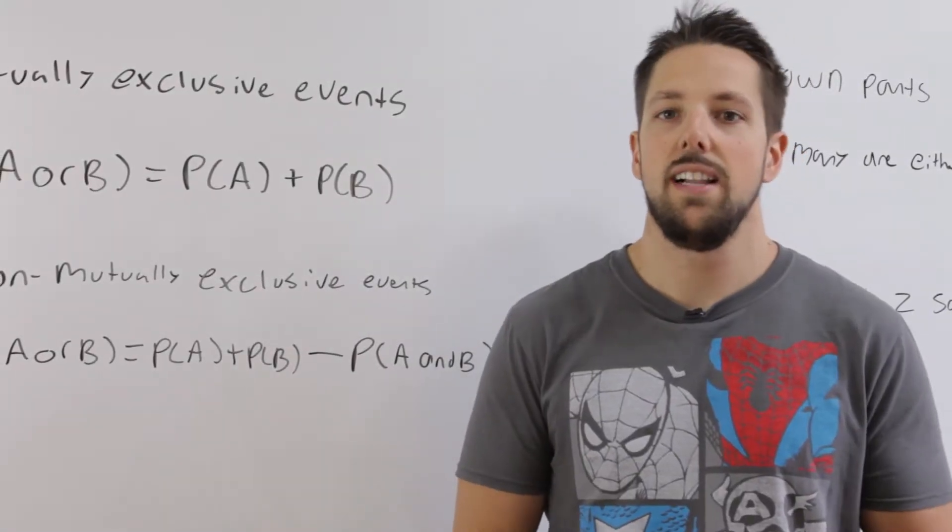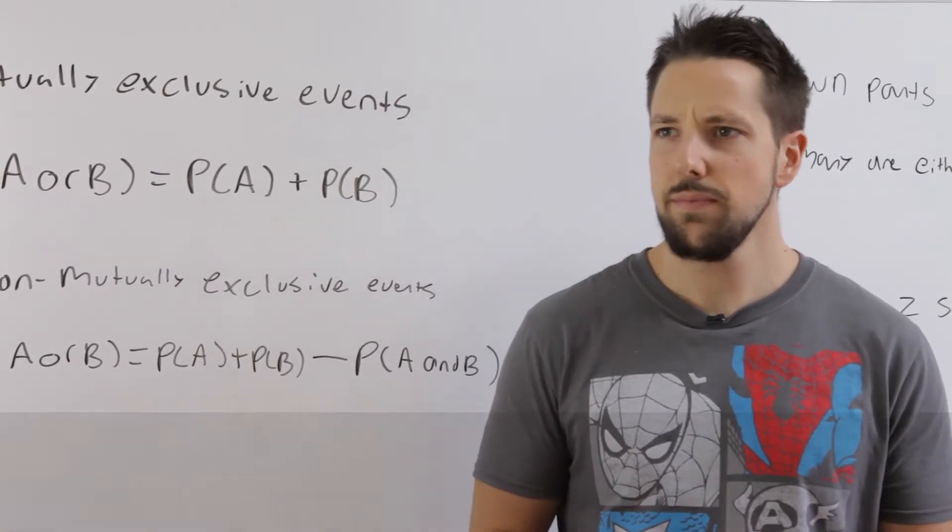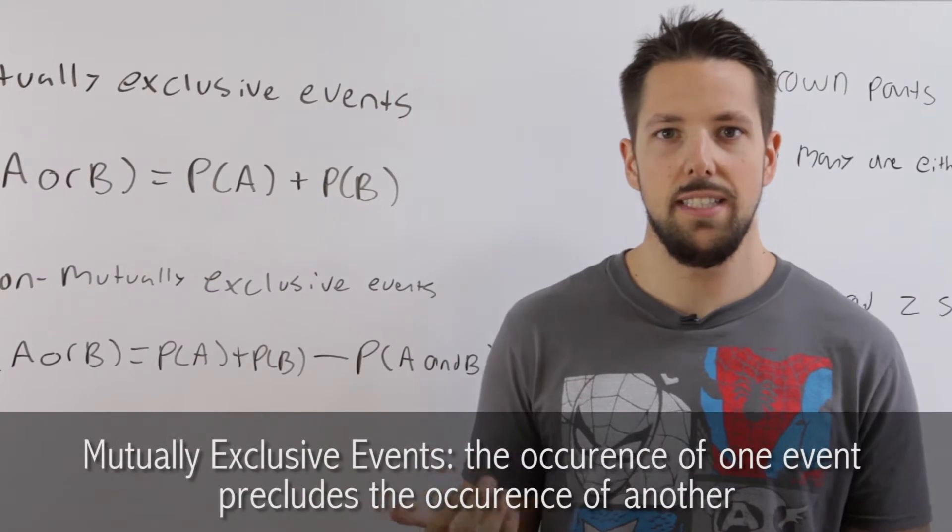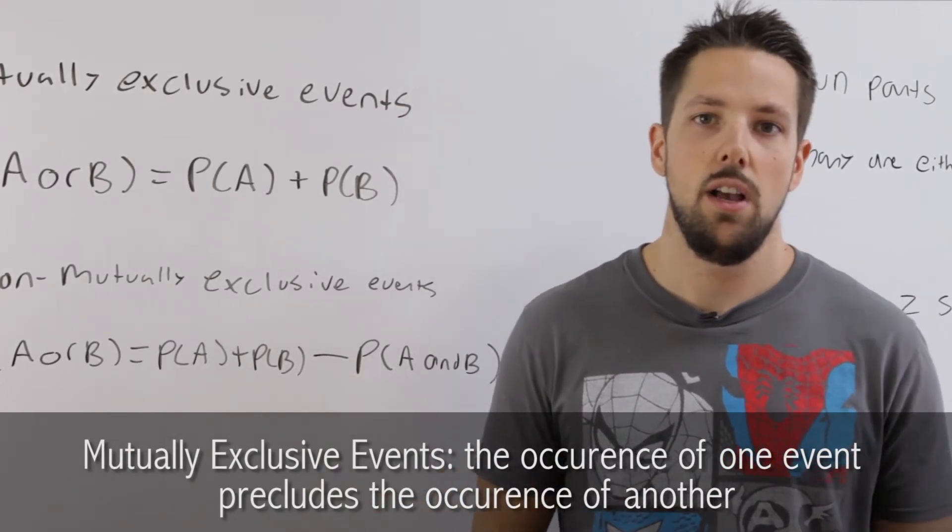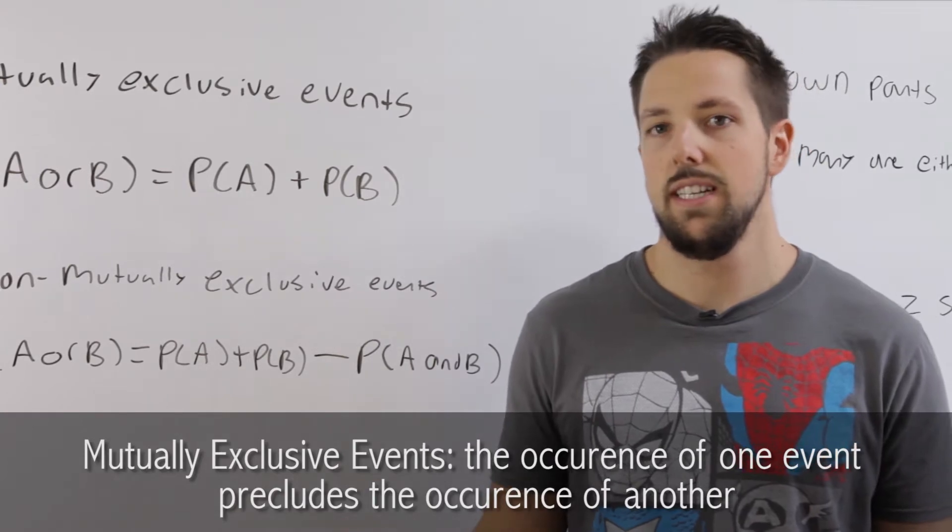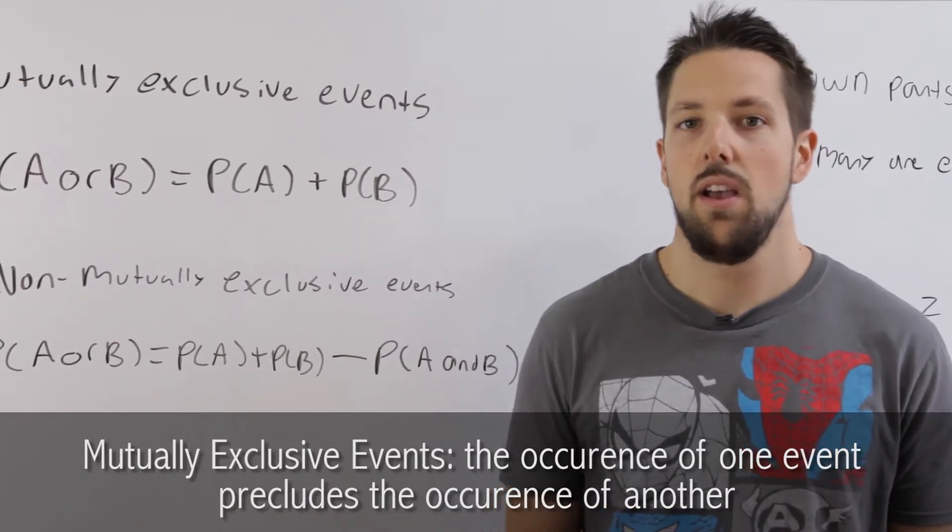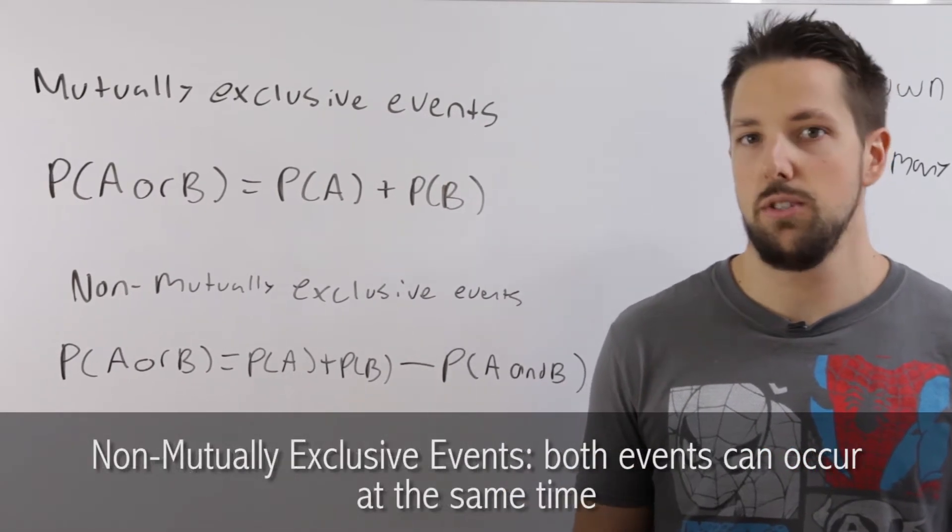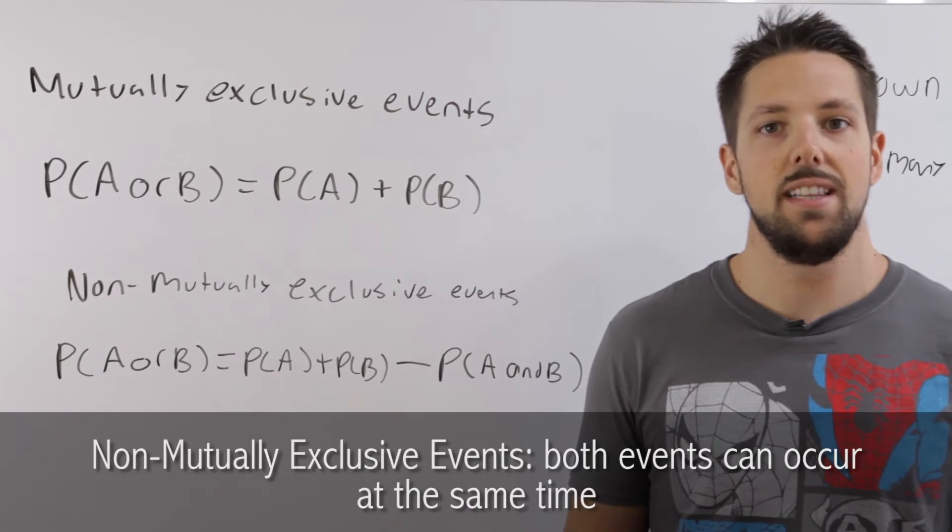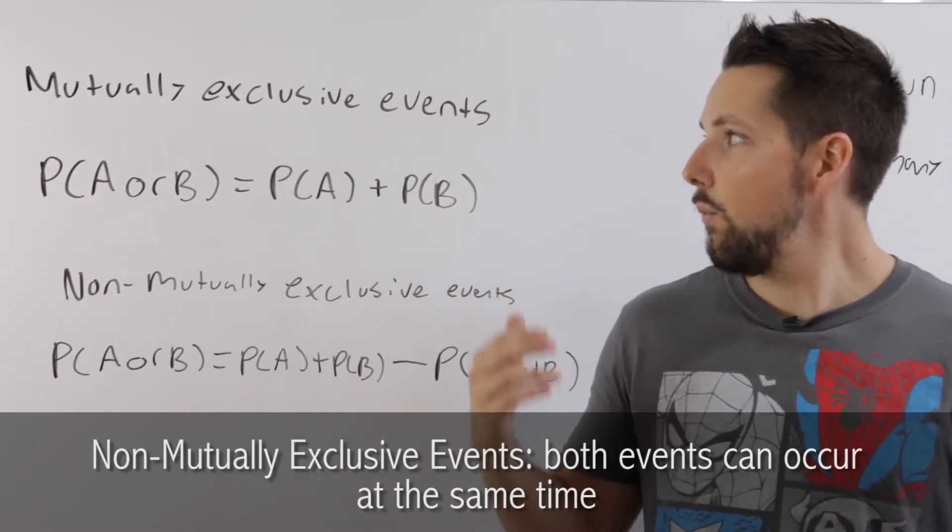We're going to talk about another way that we can classify events: mutually exclusive or non-mutually exclusive. With mutually exclusive events, the occurrence of one outcome precludes the occurrence of another. So rolling a five and rolling a six are mutually exclusive because you can't roll them both at the same time. But rolling a six and rolling an even number are non-mutually exclusive events because there's an intersection between the two.